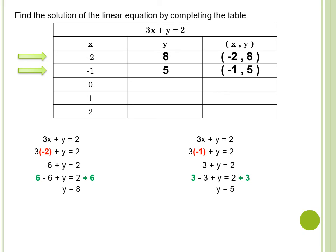Let's check the answers. If x is 0, the y coordinate is 2, and the solution is (0, 2). If x is positive 1, y is negative 1, and the solution is (1, -1). If x is positive 2, y is negative 4, and the solution is (2, -4). Thank you for watching this video. I hope you learned something about how to find the solutions of linear equations in two variables.